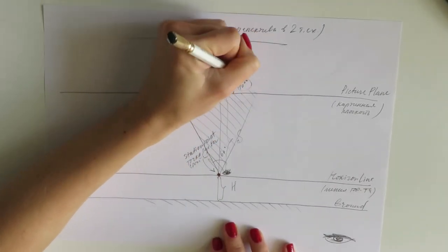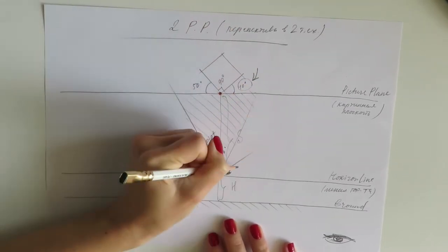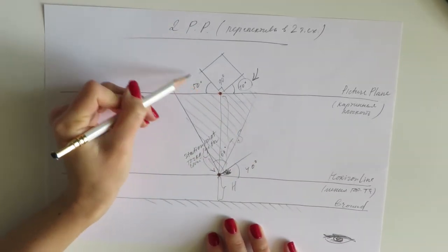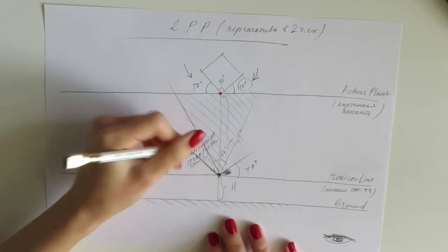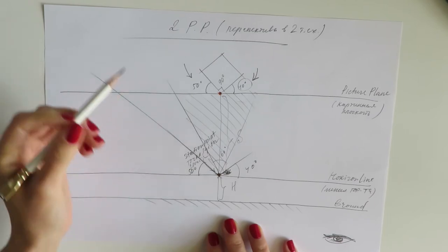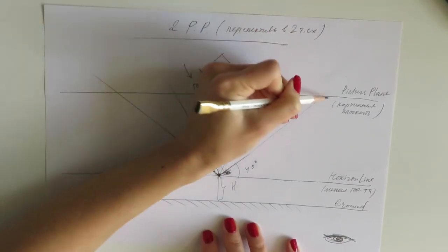Well, now you have to locate your vanishing points, and the way that you do that is you have an angle here, let's say it's 40 degrees, and an angle here, let's call that 50 degrees. So you will take a line that's 50 degrees, for example, and then project it up to the picture plane and up to the picture plane from the other side.